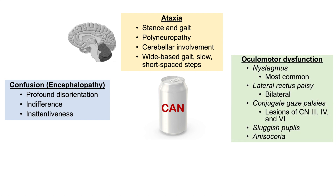N is for nystagmus, but it really encompasses a broader group of oculomotor dysfunction. Nystagmus is the most common finding, but there can also be lateral rectus palsy, usually bilateral, conjugate gaze palsies, and lesions of cranial nerves 3, 4, and 6. When assessing eye movements, you'll pick up on these issues. You may also see sluggish pupils and anisochoria, which is unequal pupil sizes.